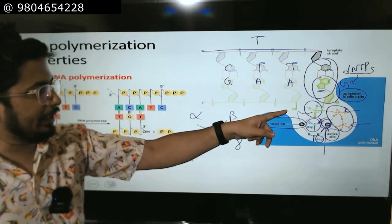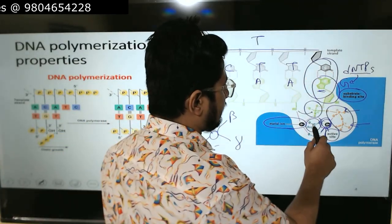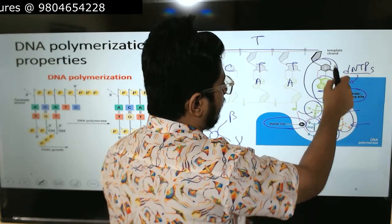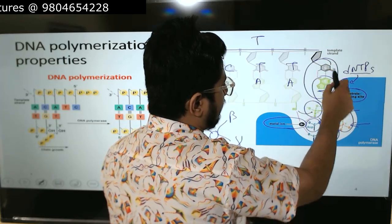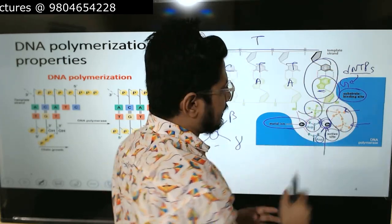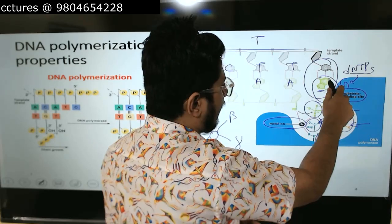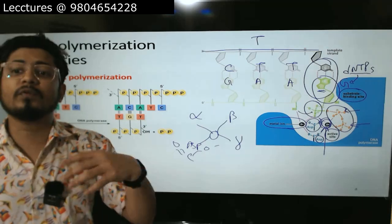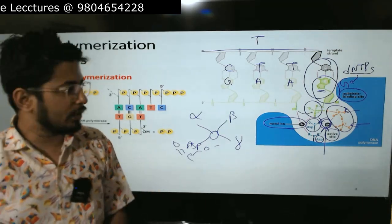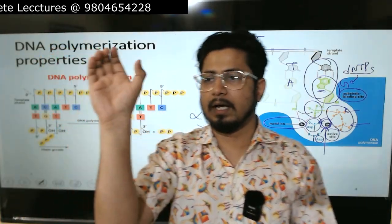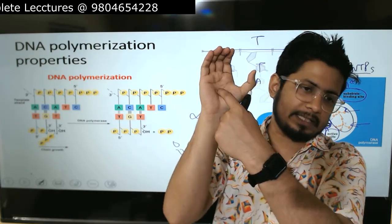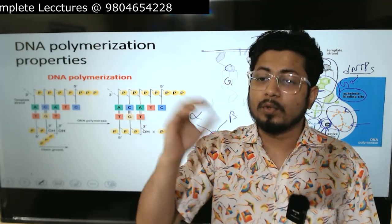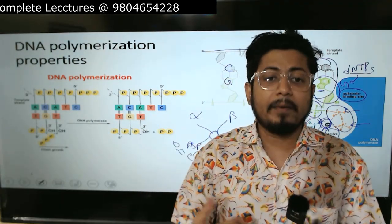If there is no match, there is a structural change and the mismatched strand is transferred to another site known as the exonuclease site — the proofreading site of the polymerase. The polymerase structure looks like a thumb and has both a catalytic site and an exonuclease proofreading site.